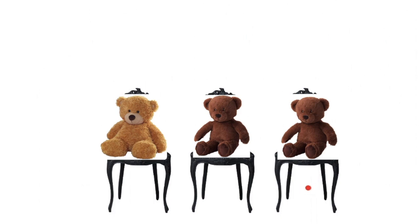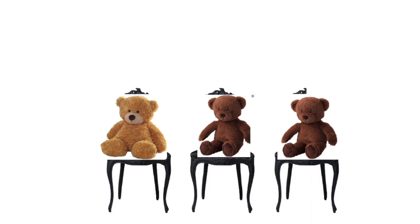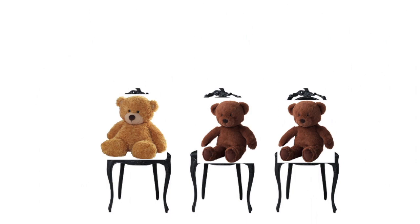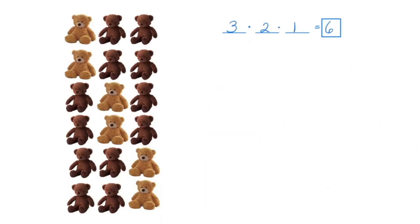Now let's say that this bear wants to sit beside this bear, so we can move these two bears around. We put one there and the other there. It doesn't look any different because these two bears happen to be identical. I do have three objects — three bears — that I am arranging into three different positions. So I have three possibilities for which bear can go into the first chair, then two, then one, giving us six arrangements.